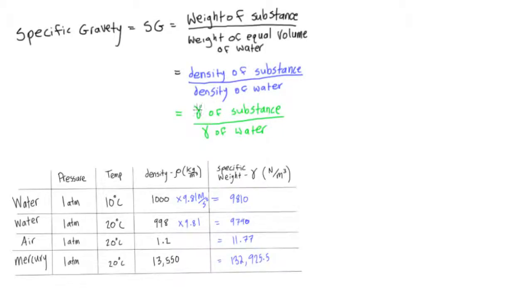Similarly, because density and specific weight are related, we can also divide the specific weight of the substance by the specific weight of water to find the specific gravity. We could also divide the weight of a substance by the weight of an equal volume of water.